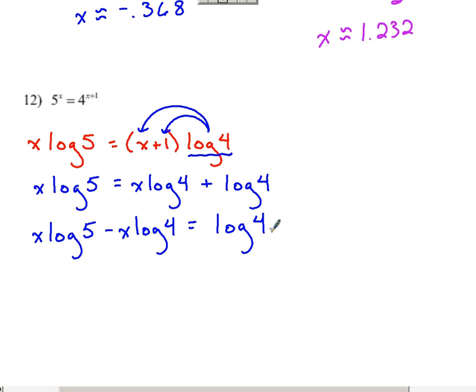The reason I do that, bringing all the x's to one side, is now I can factor out this x, right? If I factor that out, you have x times the quantity log of five minus log of four. All of this, I know if I calculate it out, will represent a number. So I can take that number because it's multiplied to x and divide it over. And x is going to equal log of four over that quantity of log five minus log four.